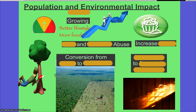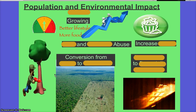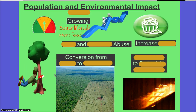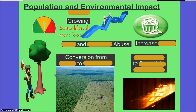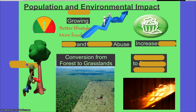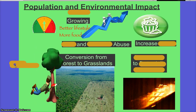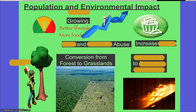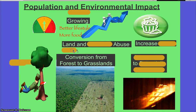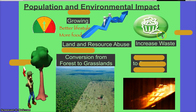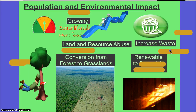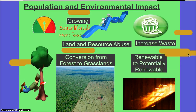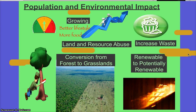Where do nomads live — mountains or forests? Where do agricultural societies live? Wherever they build things. And in order to build things, they cut down forests to create grasslands or farmlands, to grow crops and build homes. This is definitely an abuse of land and resources — they're limiting resources and abusing what they have. Waste increases because they're settled. And we already have a shift from renewable resources to potentially renewable resources, which is an environmental problem.